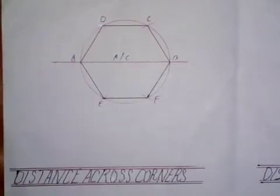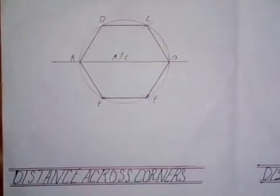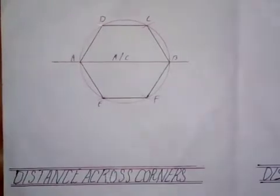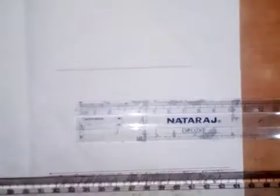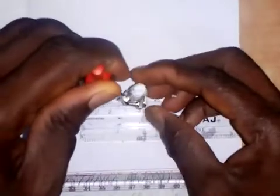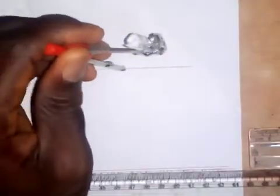Now let's see how to construct a hexagon given a distance across flats. We are still using 60 millimeters. Draw a horizontal line, take a measurement of 30 millimeters on your ruler, place your compass at a point on the line, and draw a circle.